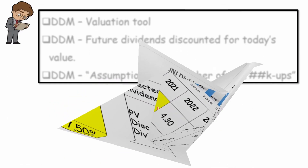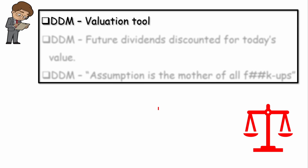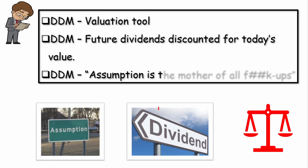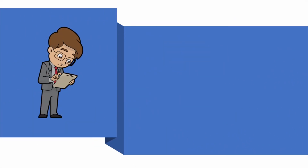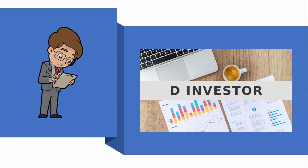Let's see what we learned. The dividend discount model is a valuation tool that helps us evaluate stocks using future dividends discounted to today's value. As we saw, the model is very sensitive to its basic assumptions — as someone said in a famous movie, 'Assumption is the mother of all foul-ups.' If you know which movie that is, drop a comment below. That's it for today — if you liked the video, please subscribe and give a thumbs up. See you in the next video!